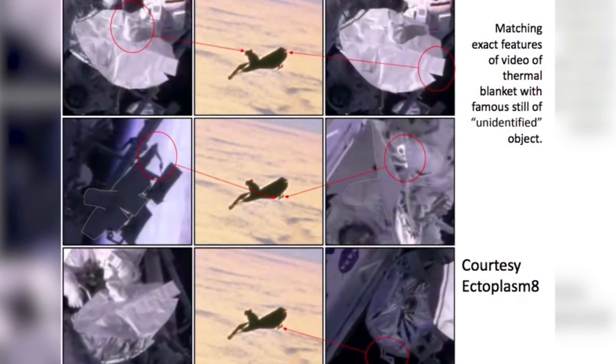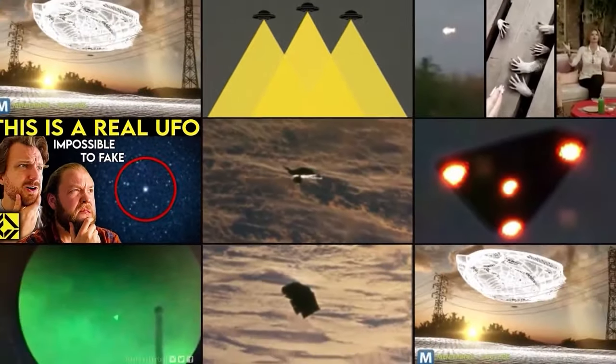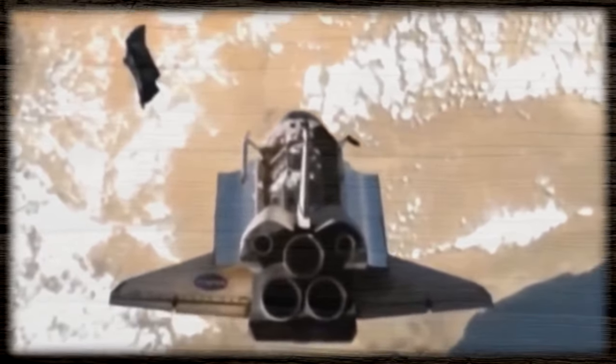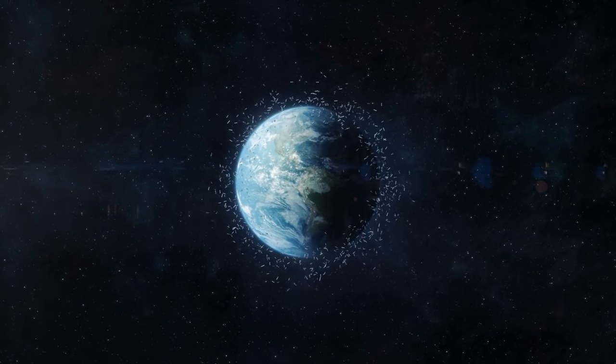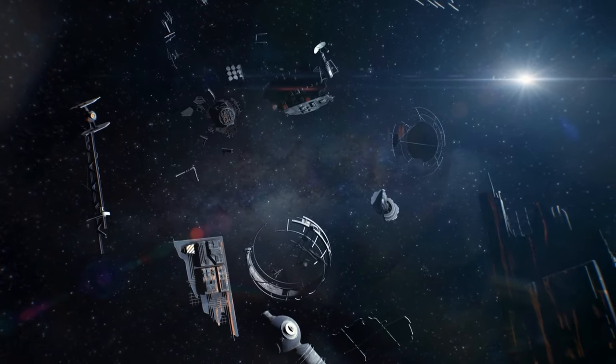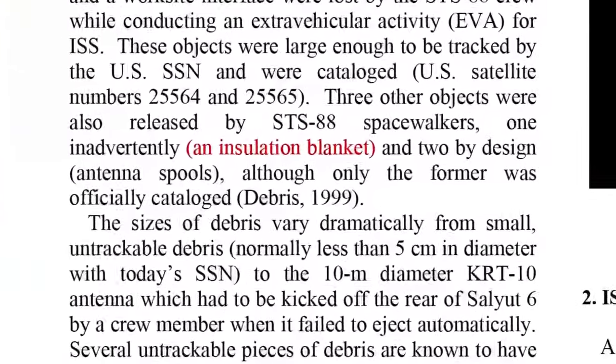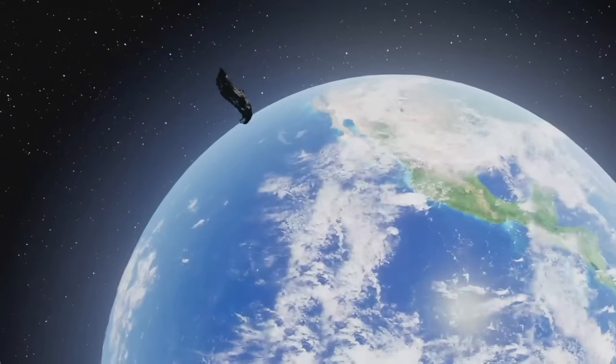The Black Knight satellite story, while captivating, has faced considerable scientific skepticism. Scientists and researchers often seek rational explanations for phenomena that are initially deemed mysterious. NASA's stance on the issue is clear. What's often referred to as the Black Knight satellite can be attributed to space debris or misinterpretation of sensor data. Space is littered with debris, including spent rocket stages, defunct satellites, and fragments from collisions. These objects can reflect sunlight and appear as unidentifiable objects, leading to potential misidentification as the Black Knight. One notable instance was explained by NASA as a thermal blanket lost during a space shuttle mission.